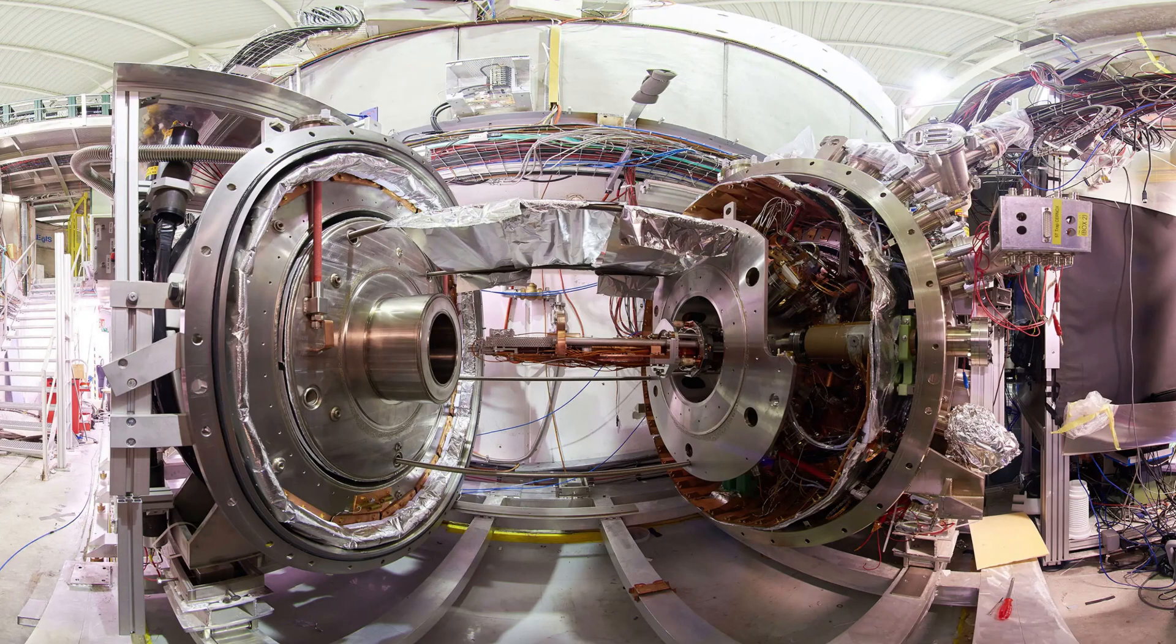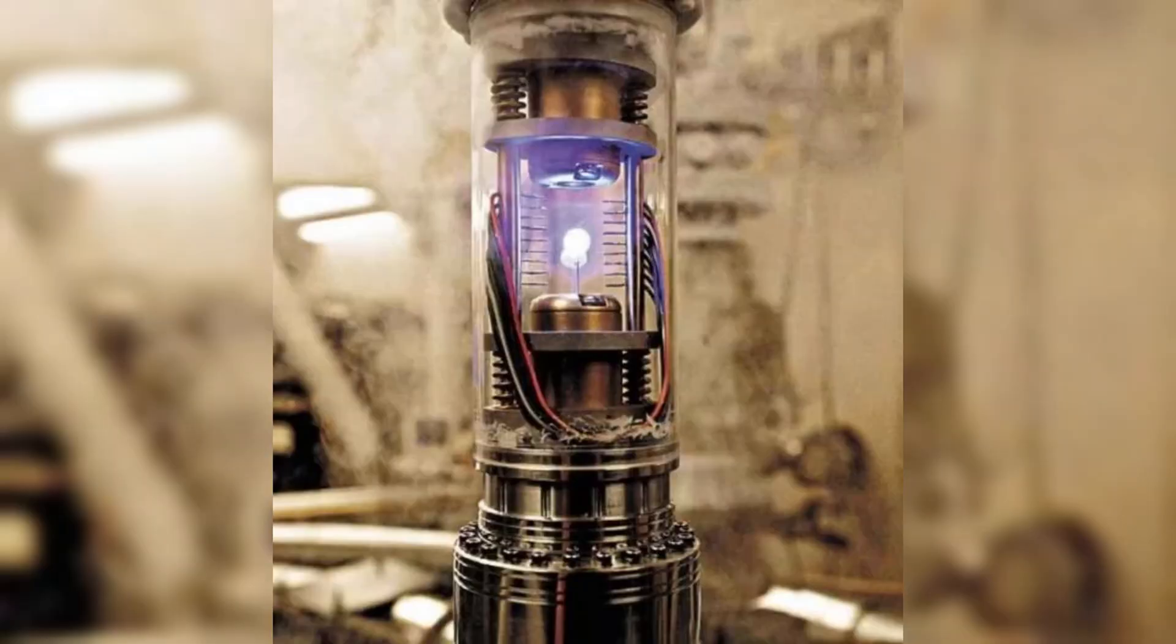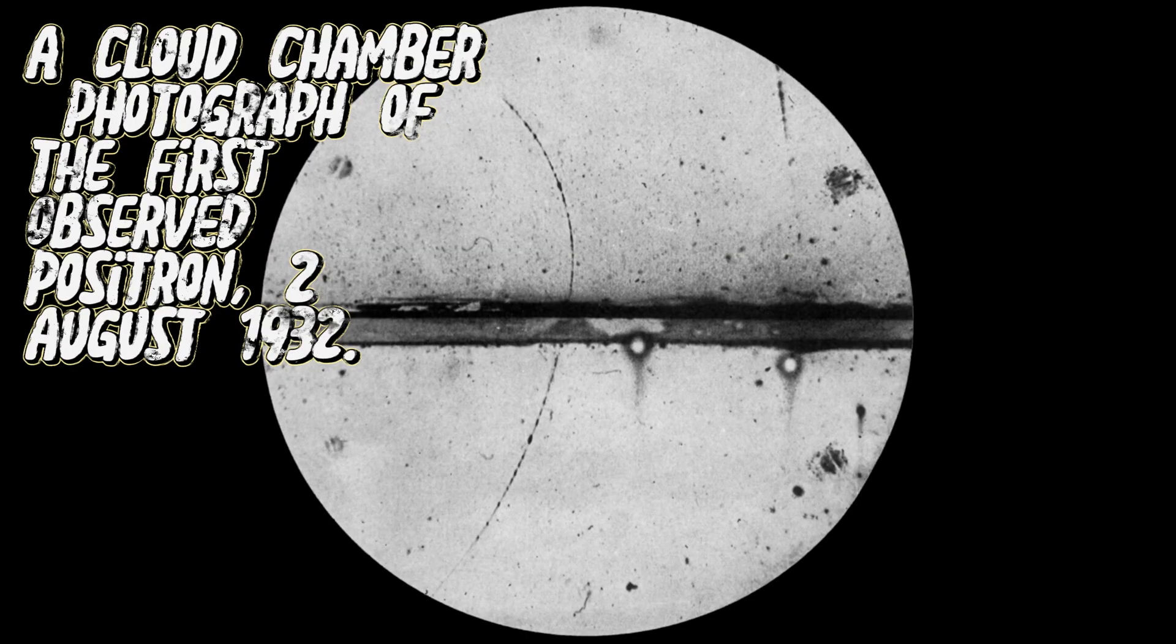Next is antimatter. In modern physics, antimatter is defined as matter composed of the antiparticles of the corresponding particles in ordinary matter and can be thought of as matter with reverse charge, parity, and time, known as CPT reversal.